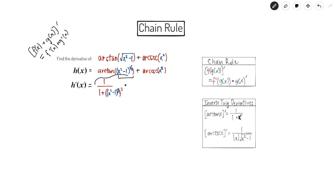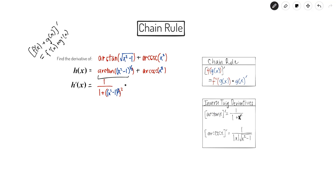Everything we've written so far is just taking the derivative of the first term of our expression — we haven't touched the second term yet. So I'm multiplying by the derivative of the inner part. This inner part is also a function within a function, so it also requires the chain rule. I can imagine x squared minus one inside of the function x to the one half power, so I can use the chain rule again to write the derivative of the inner function.